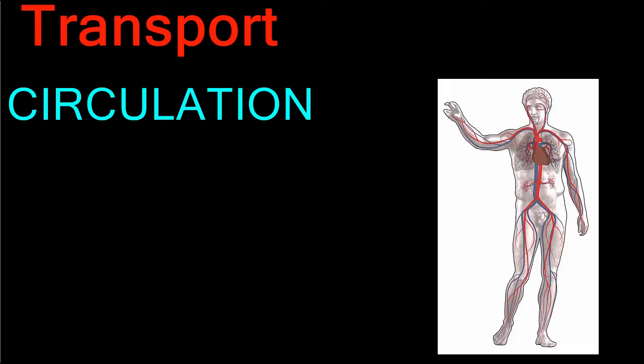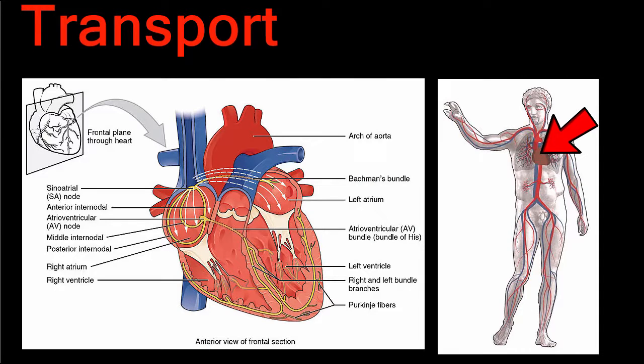Circulation is accomplished by the circulatory system, which is made up of the heart, blood vessels, and blood. The heart is a muscular organ that is made up of four chambers, two atria and two ventricles.